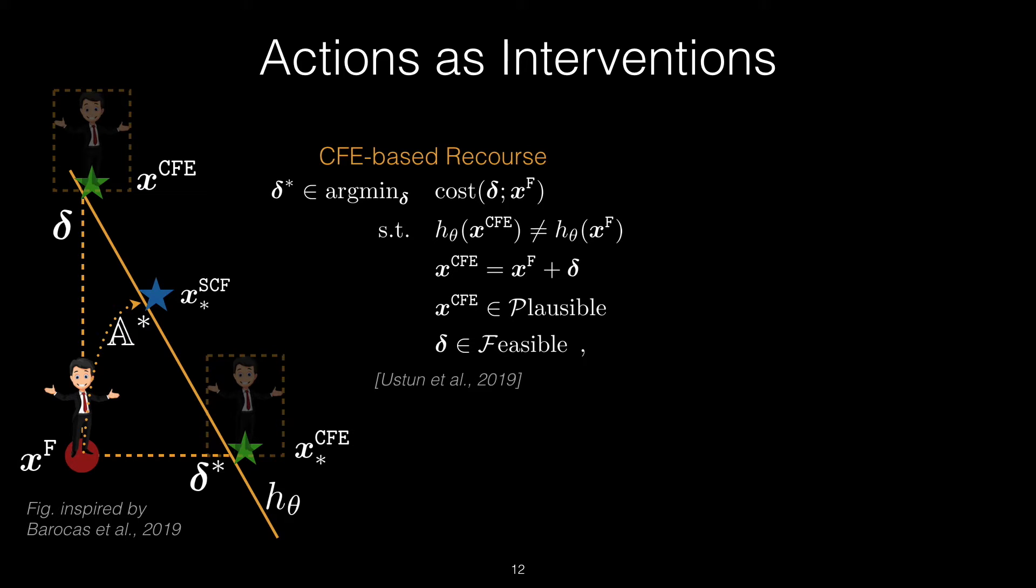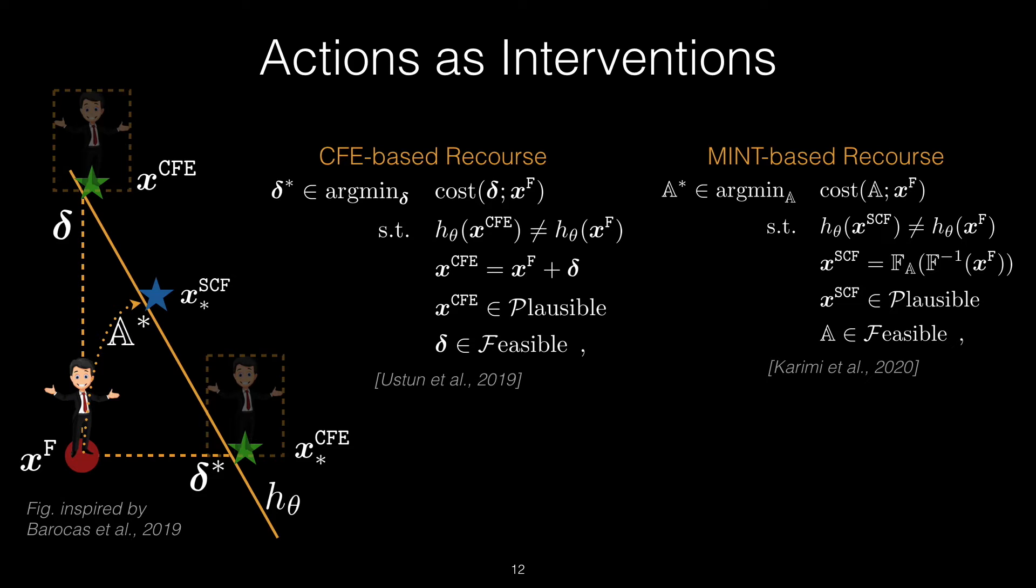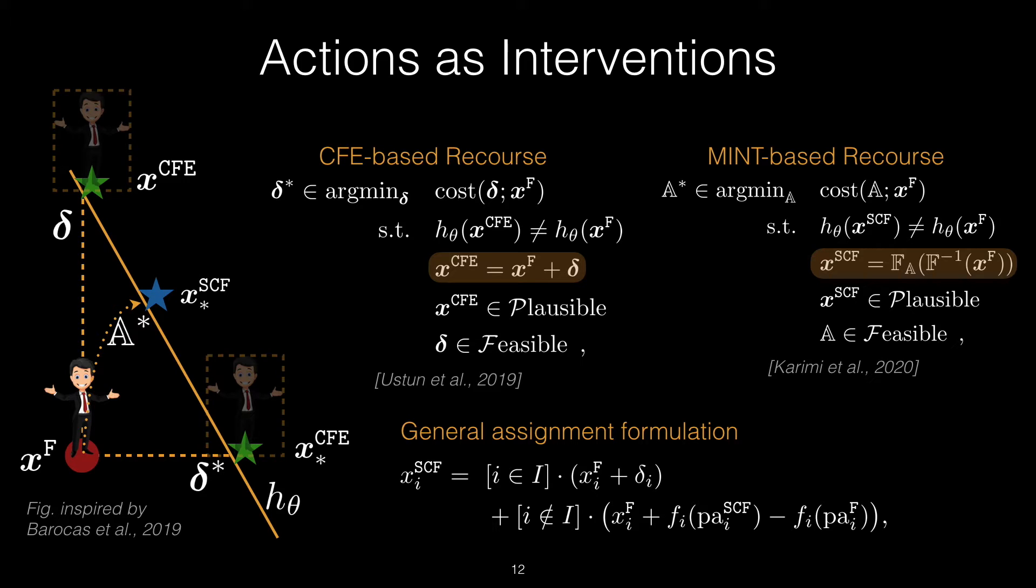To solve this limitation, we propose to reformulate the recourse problem, and instead of finding the minimum cost shift, we aim to find the minimum cost interventions. The key aspect of this reformulation, as highlighted here, is that we find such interventions via computing the structural counterfactual, which directly accounts for actions as well as the consequences of those actions towards the final outcome. We solve the new optimization problem by deriving closed-form expressions for the highlighted constraint using Pearl's three-step process for structural counterfactuals for the common family of additive noise models. We invite you to review the manuscript for more details on this derivation, as well as experimental demonstrations.